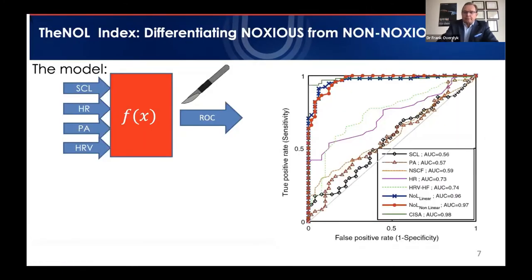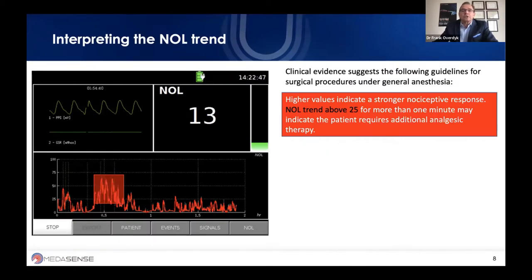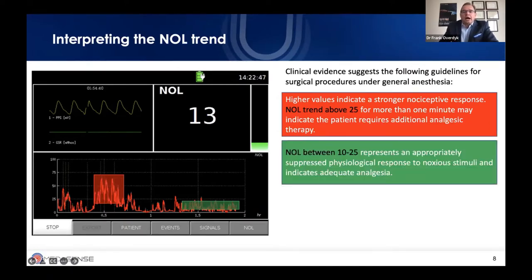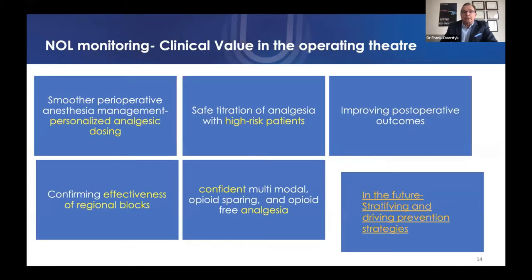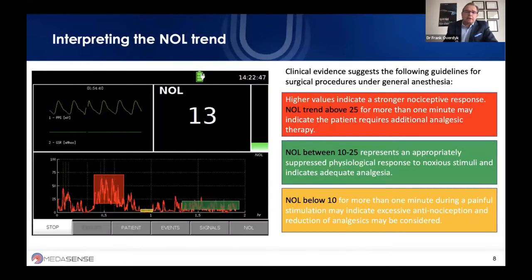The user sees a display showing a continuous plethysmograph signal and skin conductance. The NOL absolute value ranges between 1 and 100 — higher values indicate a stronger nociception response. A NOL trend above 25 for more than one minute may indicate the patient requires additional analgesics. NOL between 10 and 25 represents an appropriately suppressed physiologic response with adequate analgesia. NOL below 10 for more than one minute during a painful stimulus may indicate excessive antinociception, suggesting you may want to reduce analgesics — for example, by turning down the target concentration in a remifentanil TCI.